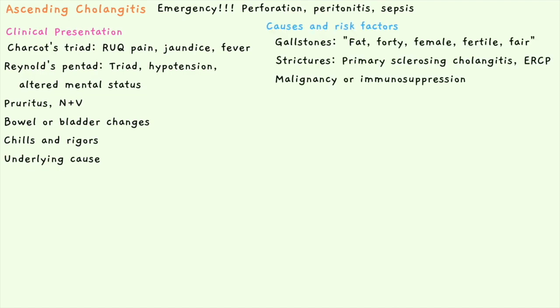The underlying causes or risk factors are things that cause obstruction in the biliary tree. Often this can be gallstones, and the risk factors are colloquially known as fat, 40, female, fertile, and fair. They don't all have to be present, but some include increased estrogens, obesity or diabetes, HRT, female sex, or impaired fat absorption such as in Crohn's disease or spinal cord injury.